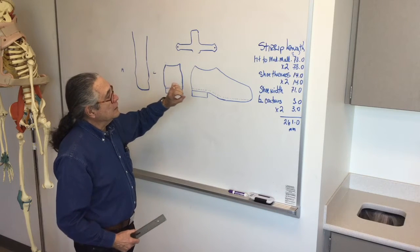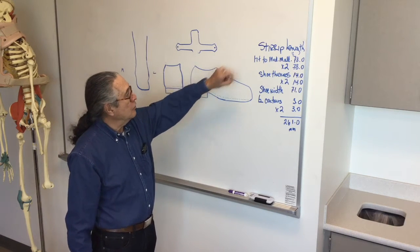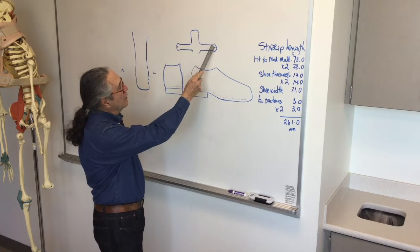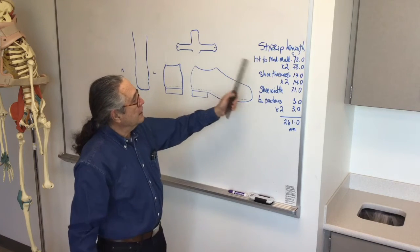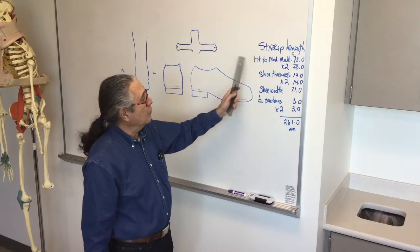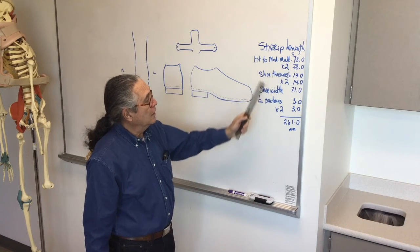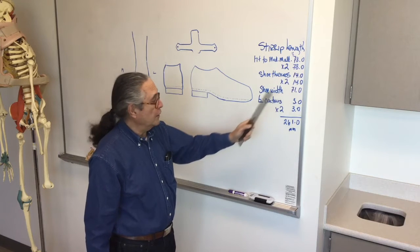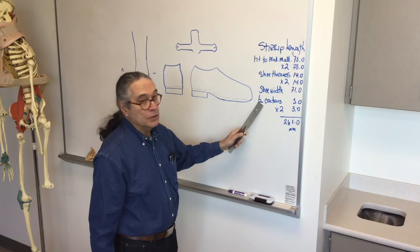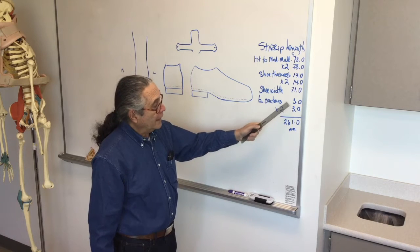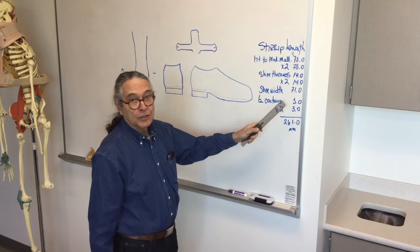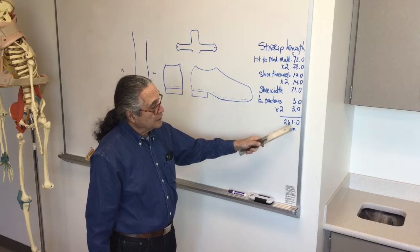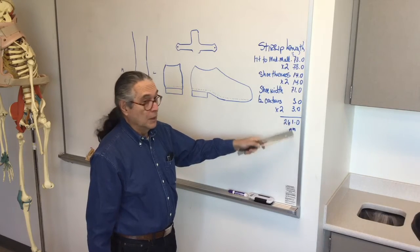While we're using these, we're also going to go ahead and calculate the stirrup length. The stirrup length is from the center of the articulation on either side. And it's calculated by taking height to the medial malleolus times two, the shoe thickness times two, the shoe width once, and the number of right angle contours times two. And for the right angle contours, the standard measurement is three millimeters difference. That gives us a total measurement of 26.1 millimeters.